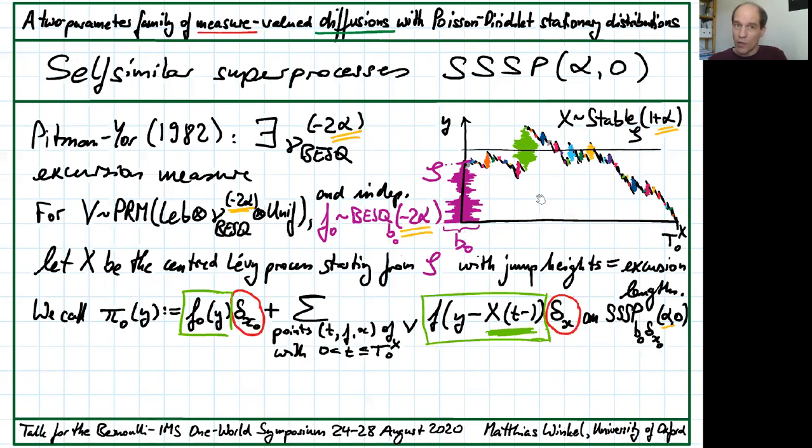But remember, the measure-valued process is going to evolve up the page. So as we move this black bar here up the page, new spindles come and go and we follow their widths, use them as atom sizes and place the atoms into locations given by the color marks. Here a spindle f born at X of T minus is evaluated at Y minus X of T minus when it crosses level Y.